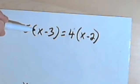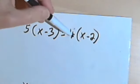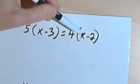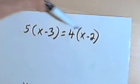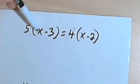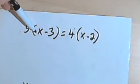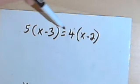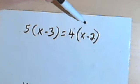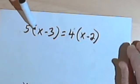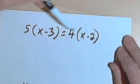So here I've got 5 times the expression x minus 3 equals 4 times the expression x minus 2. And all you're going to do is get rid of parentheses, so we would distribute the 5 across this x minus 3, distribute the 4 across the x minus 2, and then you're going to combine like terms—you can have some x terms and some constants.